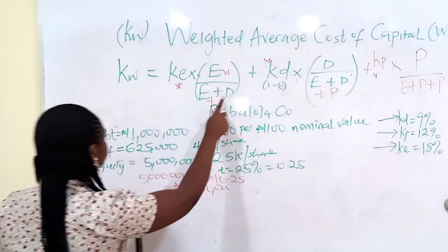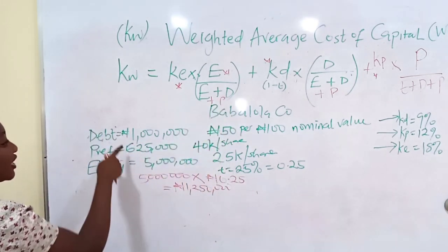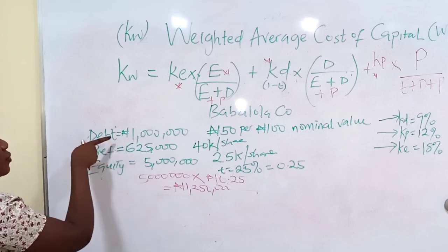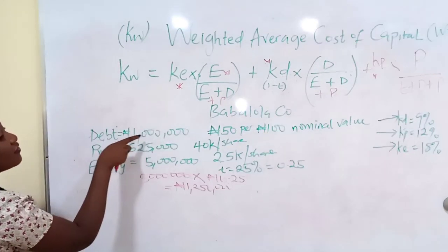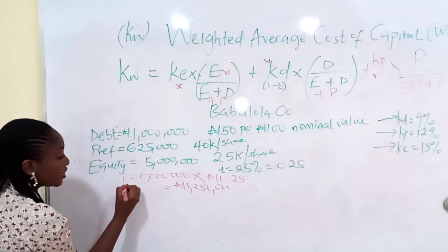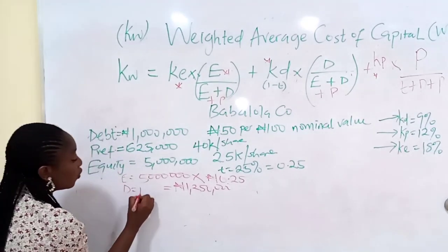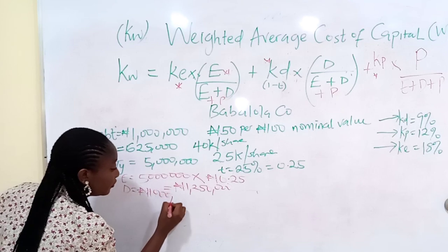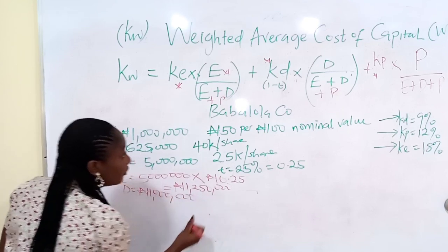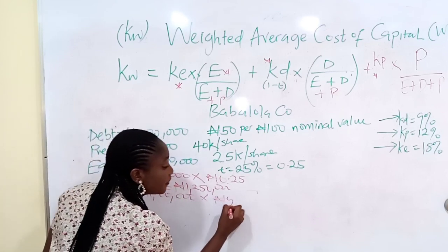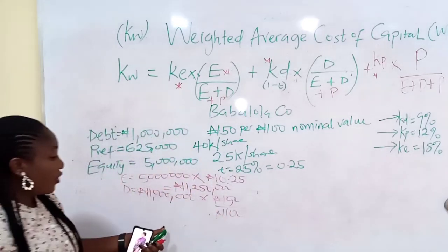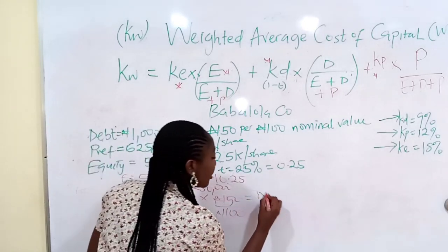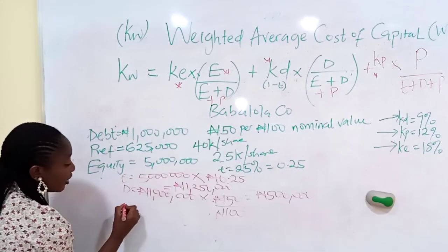Do we have value for the debt? The company has in issue 1 million Naira loan notes quoted at 50 per 100. Value of debt is 1 million Naira times 50 over 100, and that is 500,000 Naira.